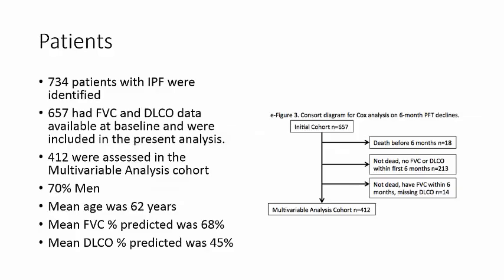Of the 734 patients initially identified, 657 did not have baseline FVC or DLCO and were excluded. Of the remaining, 213 were further excluded because their FVC or DLCO was not obtained within the first six months, and 14 were excluded for missing FVC or DLCO values, leaving 412 patients assessed with multivariable analysis.